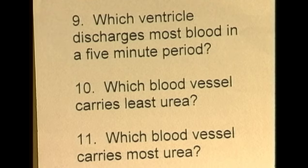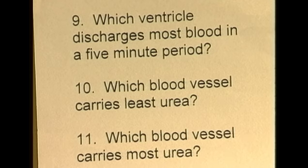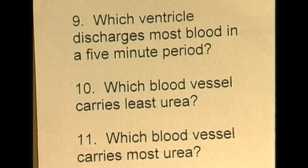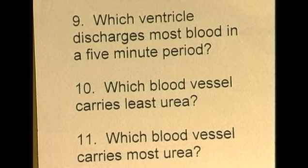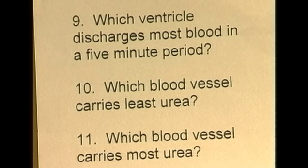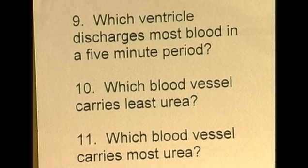Question ten: which blood vessel carries least urea? Urea is produced in the liver and excreted via the kidneys, so the blood vessel leaving the kidneys will have slightly less urea because some has been excreted in the urine. The vessel which drains the kidney is the renal vein — the right and left renal vein, one draining each kidney — so the vessel carrying least urea is the renal vein.